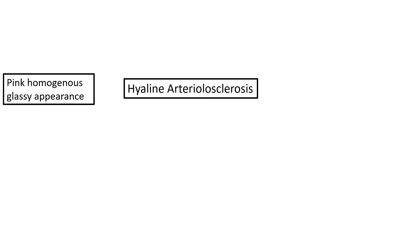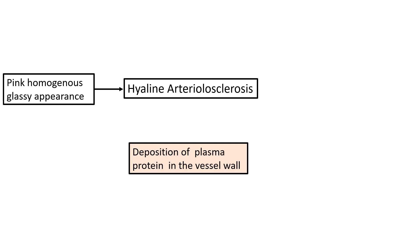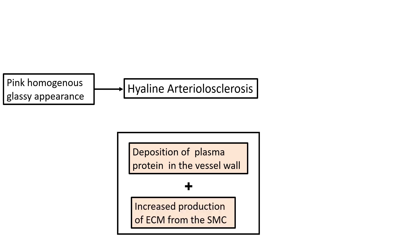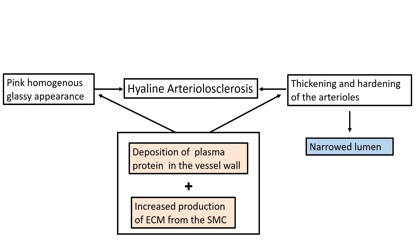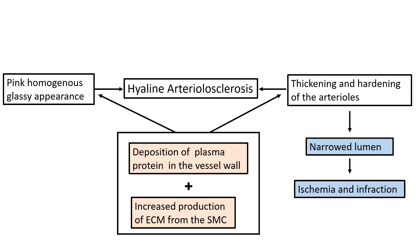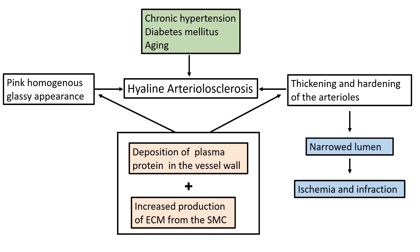In summary, hyaline arteriolosclerosis is the pink homogenous appearance of the arterioles due to the deposition of plasma proteins in the vessel wall as they leak across the vascular lumen. It is also due to the increased production of extracellular matrix from smooth muscle cells. This leads to thickening and hardening of the arterial wall with a narrowed lumen, causing ischemia and infarction of the tissues the arteriole supplies. Besides chronic hypertension, hyaline arteriolosclerosis can also be caused by diabetes mellitus and aging.